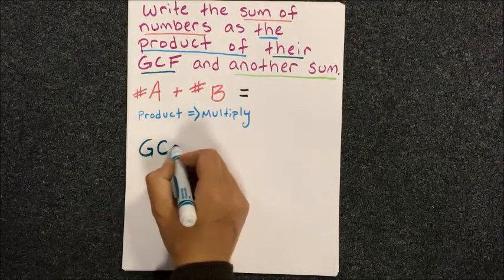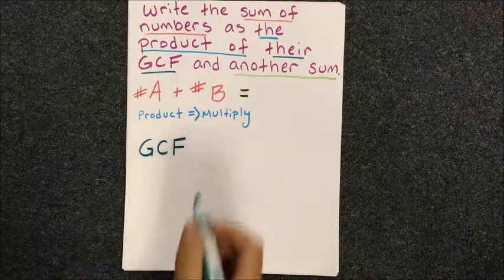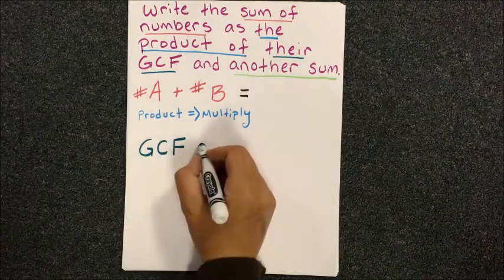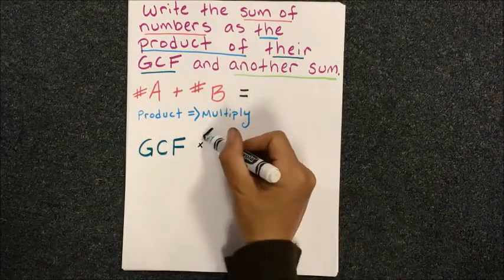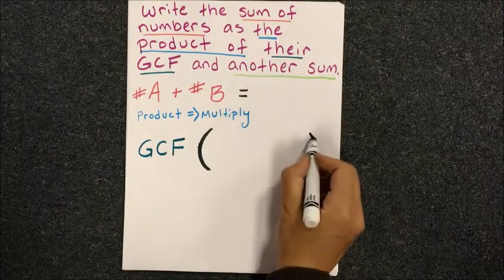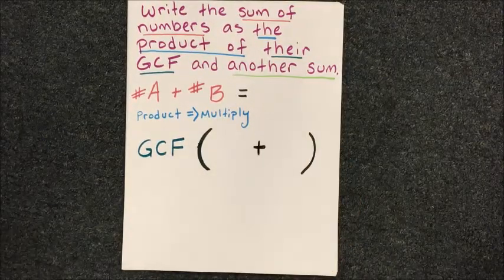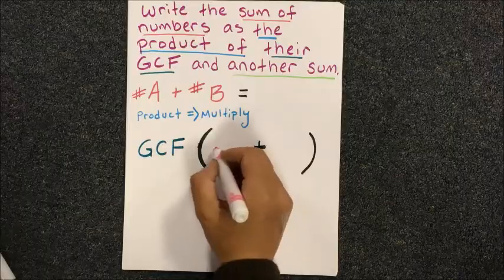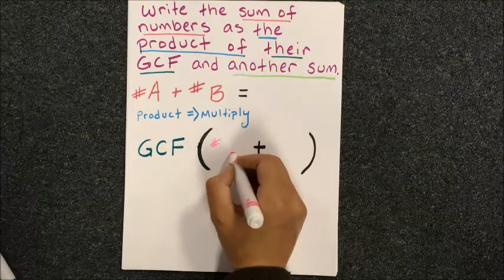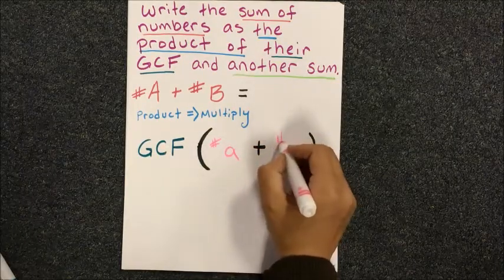So the GCF, or greatest common factor, will be written first. Product means we multiply using parentheses to keep it grouped nicely, and the other sum will go inside, which we'll call lowercase a and lowercase b.